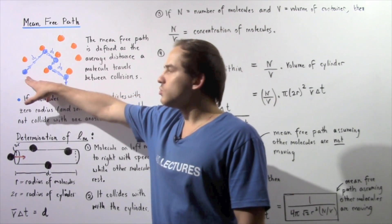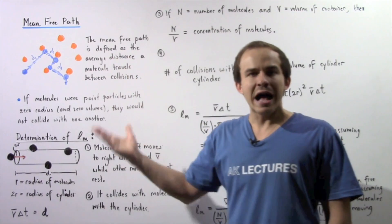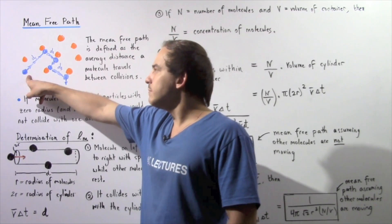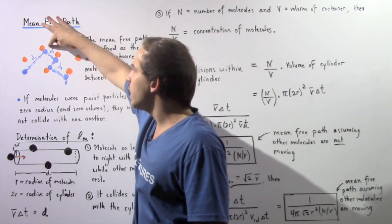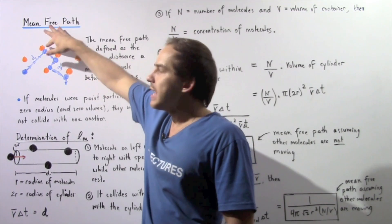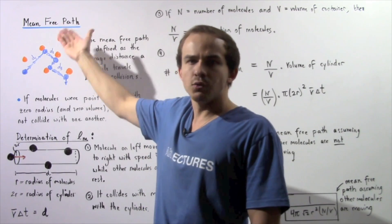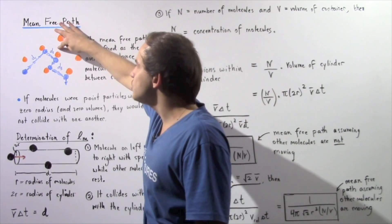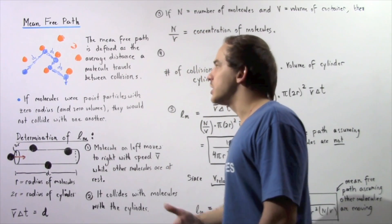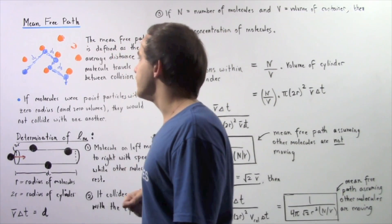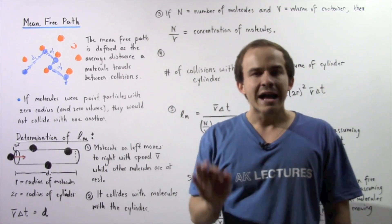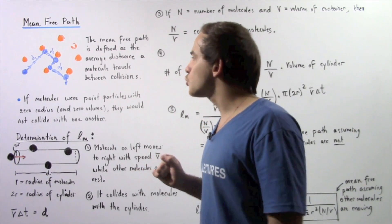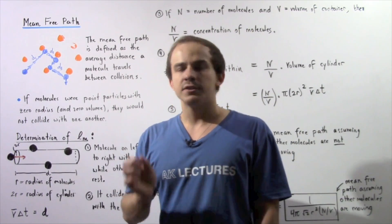So let's suppose we have the following blue molecule that is traveling along a straight path with some velocity. Let's suppose it moves a distance d1 before it makes its first collision. It collides and then moves in a different direction with a different velocity. Let's suppose it then travels a distance d2 before its second collision, and then travels a distance d3. Now if we want to find the average distance,